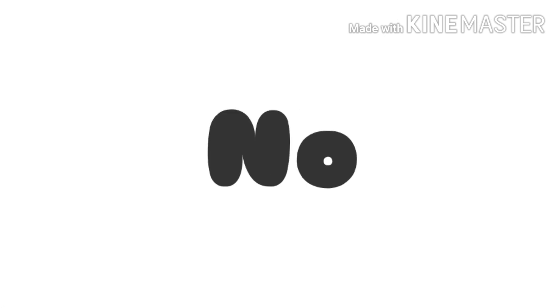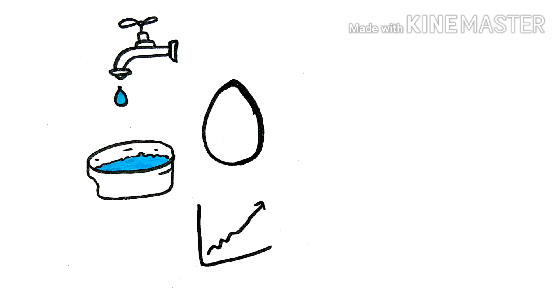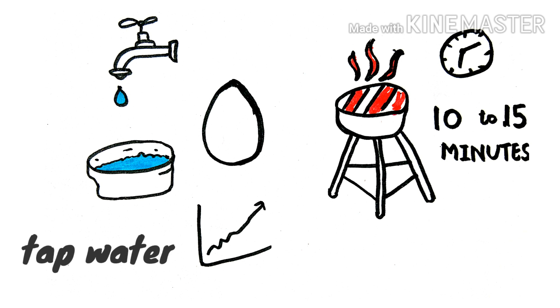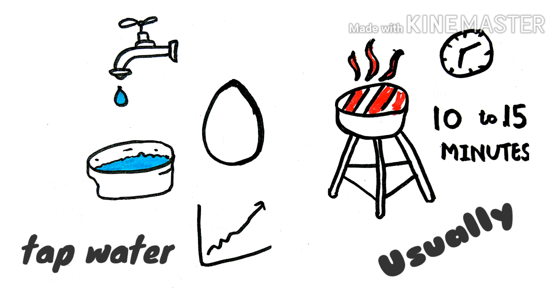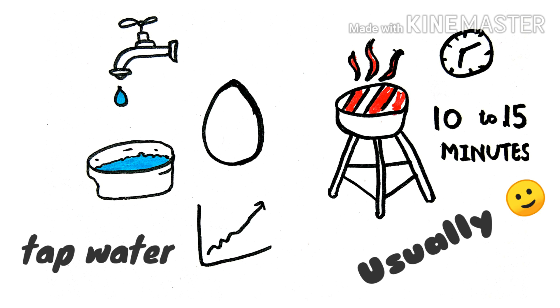Now if we place the egg in tap water that is then gradually heated to the boiling point, the cooking time is usually about 10 to 15 minutes.